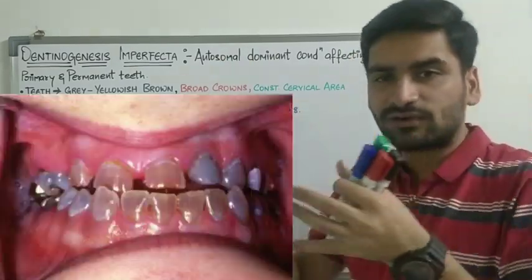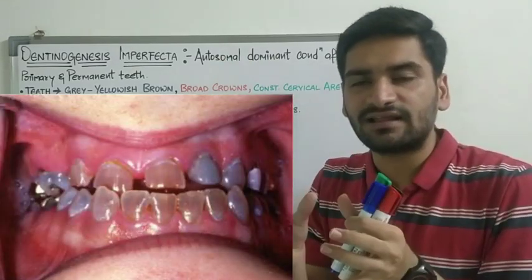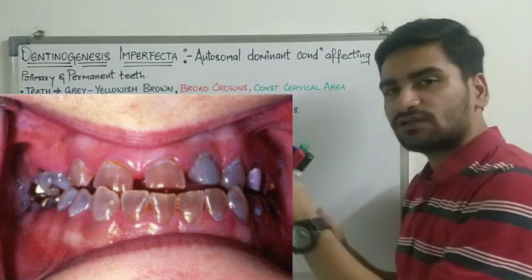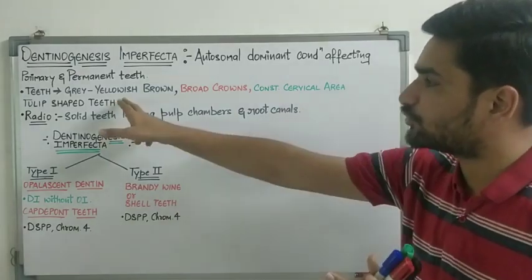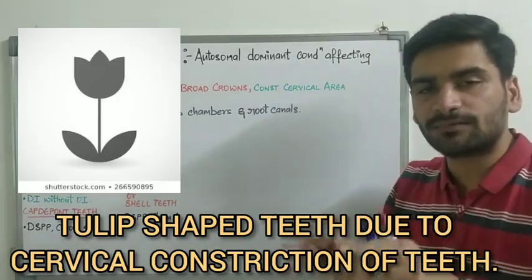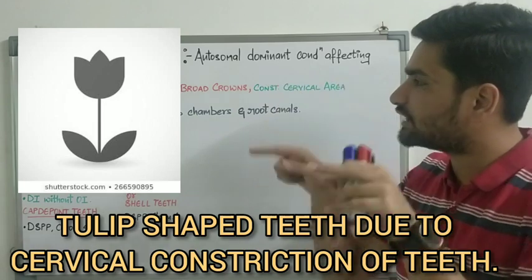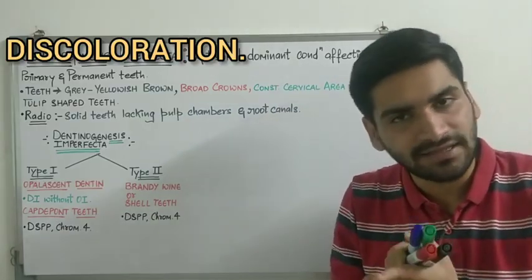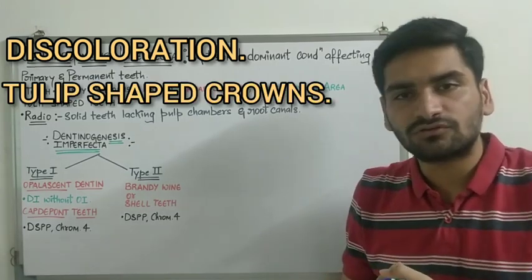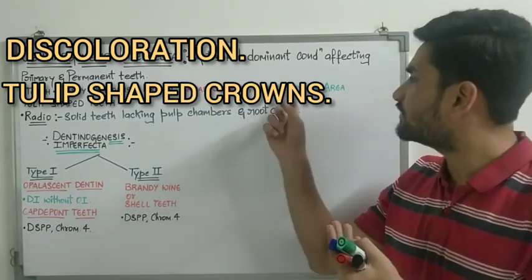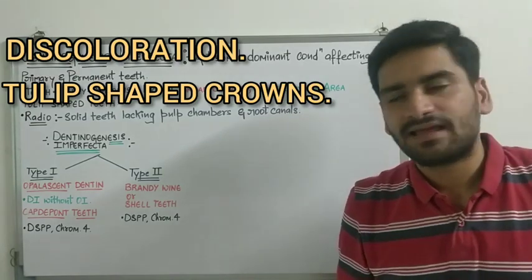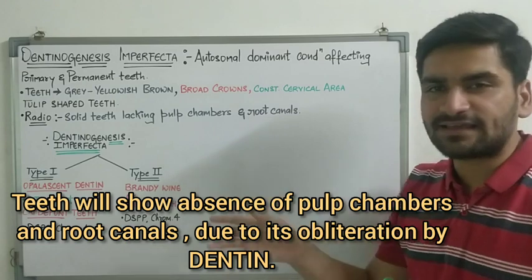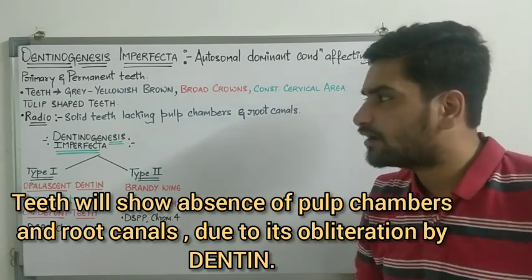The crowns of the teeth are going to appear broad. Because it is going to get constricted at the cervical area, the crowns are going to appear broad - that is tulip shape. Radiologically, you will see teeth which are lacking pulp chambers and root canals.